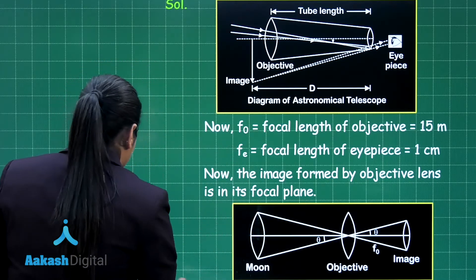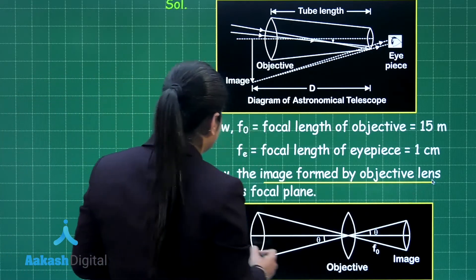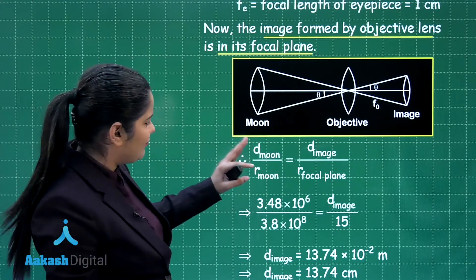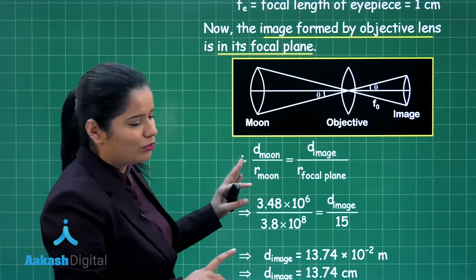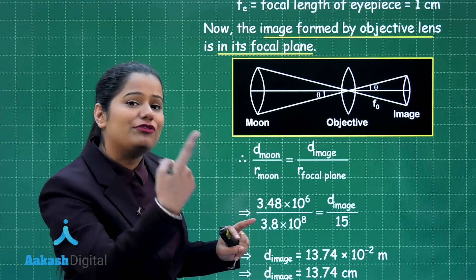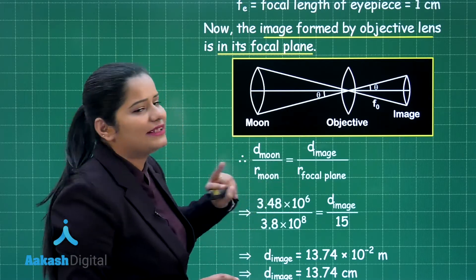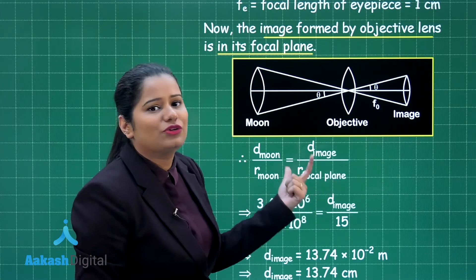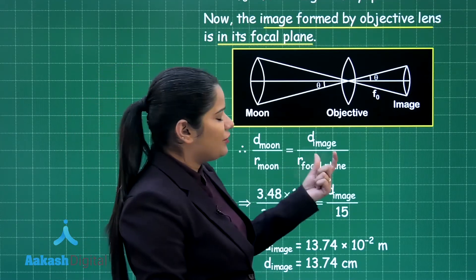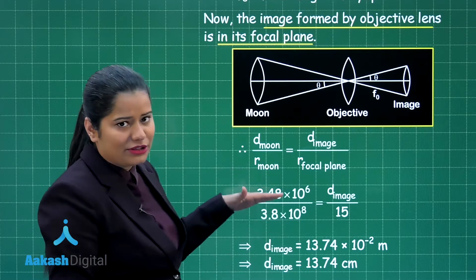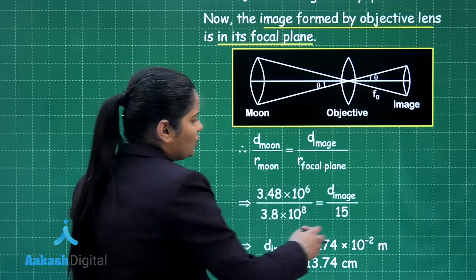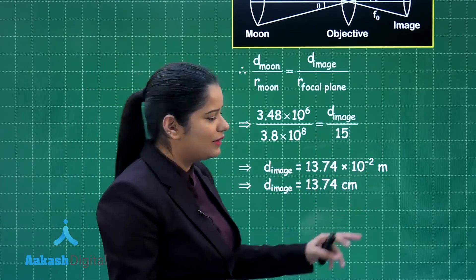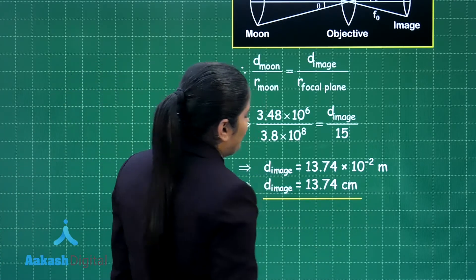In this particular case, the image formed by the objective lens will be lying in the focal plane. For that I can write that the diameter of the moon divided by the radius of the lunar orbit will be equal to the diameter of the image formed in the focal plane of the objective lens divided by the radius of the focal plane. When you substitute the values, the radius of the focal plane equals the focal length of the objective lens. Substituting all values, the diameter of the image comes out to be 13.74 × 10⁻² meters.